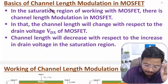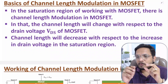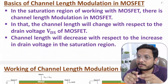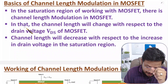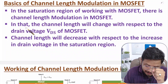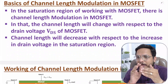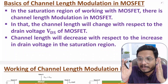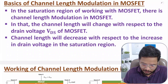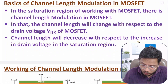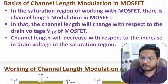Channel length modulation happens under the saturation region of MOSFET. In saturation, the channel length will change with respect to drain voltage VDS. As you increase VDS voltage, there will be a decrease in the length of the channel. This happens under the saturation region of MOSFET — channel length decreases as drain voltage increases in saturation.